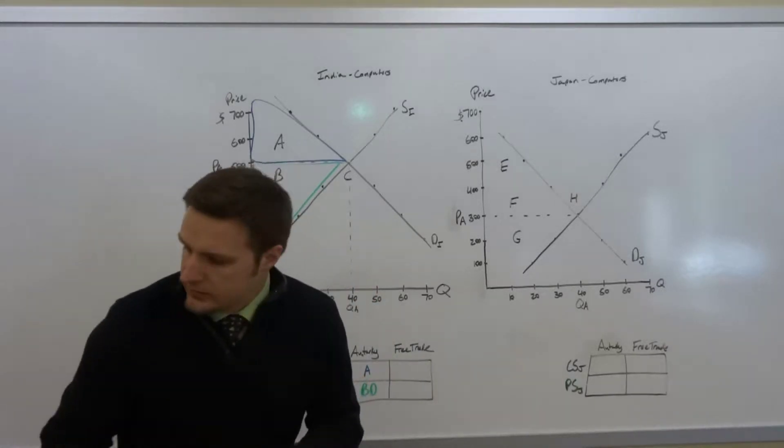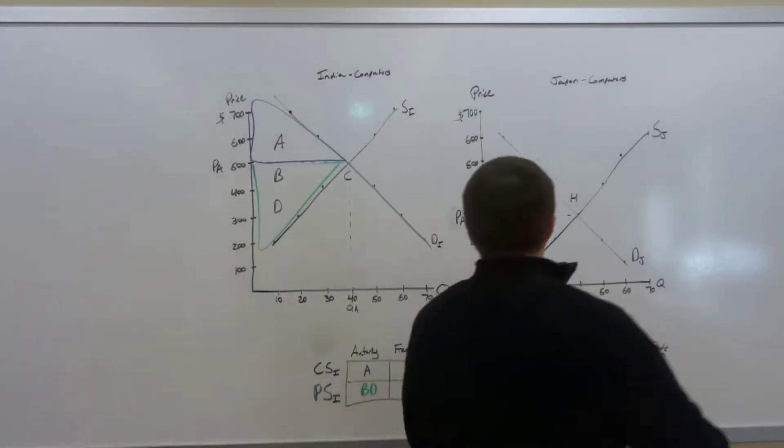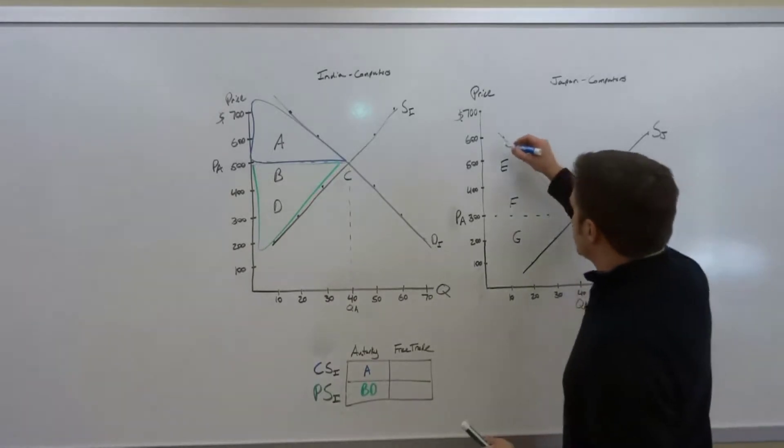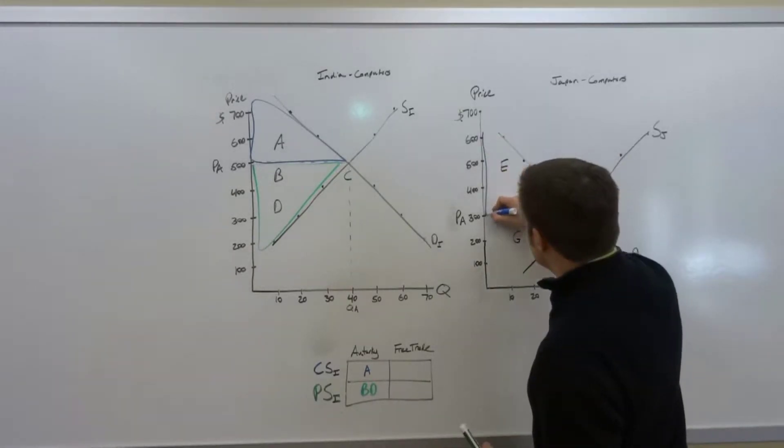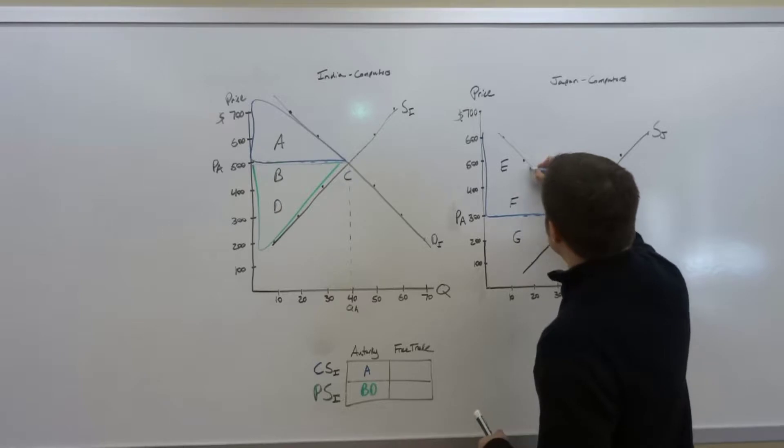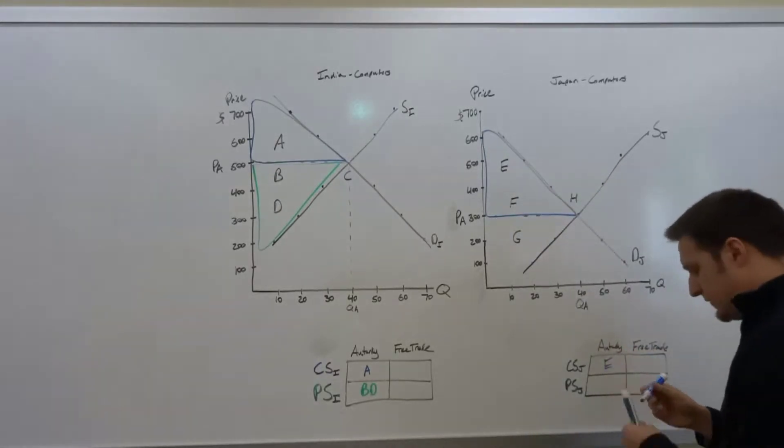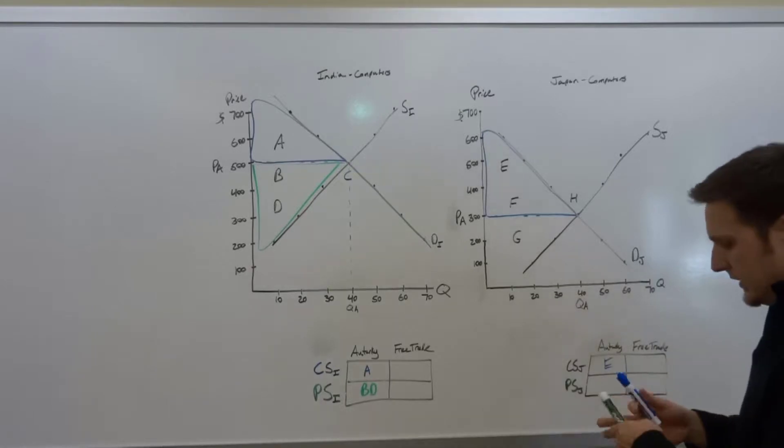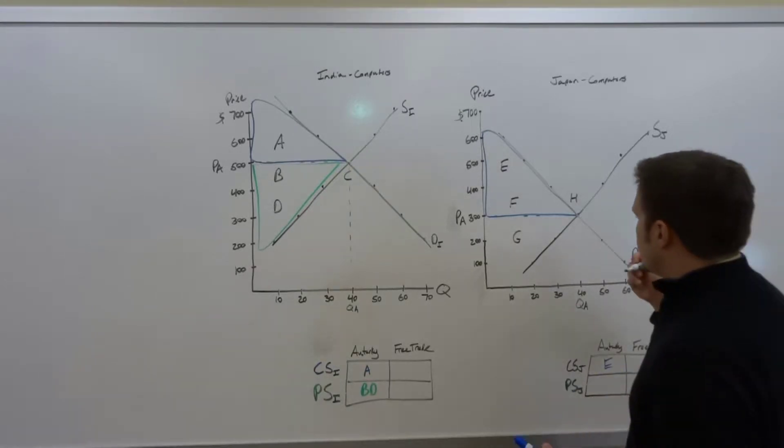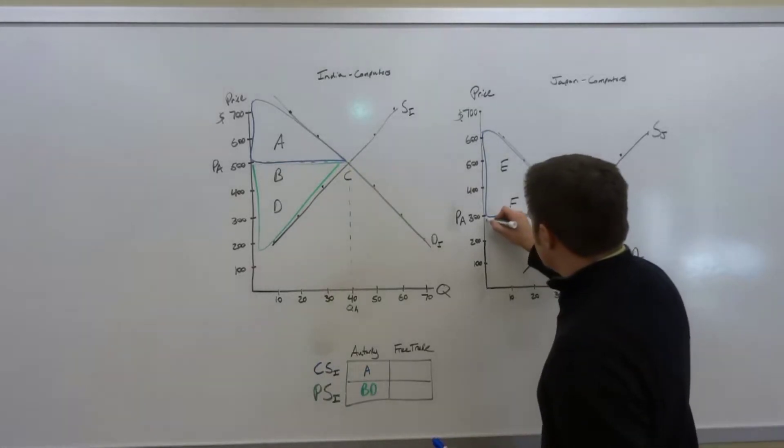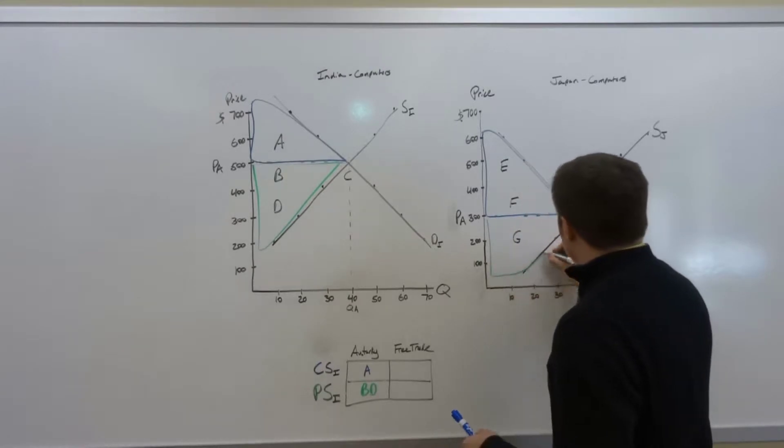In Japan, once again everything above the price is going to be consumer surplus. So that's area E for autarky for the consumer surplus, and for the producer surplus what we have is area G.